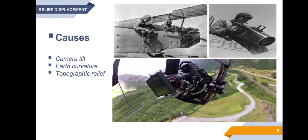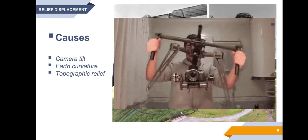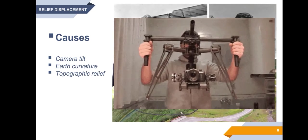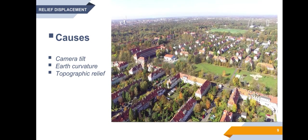In earlier days, photographs were taken using hand-held cameras from the aircraft. But with the advancement in technologies, camera tilt is greatly reduced or perhaps eliminated by the use of gyroscopically controlled cameras. The image shows a gyroscopically stabilized camera mounted onto an aircraft. Irrespective of the motion of the platform, the camera remains more stabilized. The earth curvature is of little consequence on large scale photography, as the relatively small lateral distance covered by the exposure frame introduces only minimal curvature.